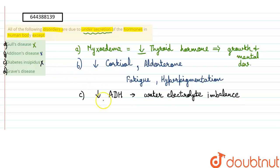Now the last option is Graves' disease. Graves' disease is caused by the hypersecretion of thyroid hormone. It is basically hyperthyroidism. So this would be the answer for our question - that Graves' disease is caused by the increased secretion of thyroid hormone and